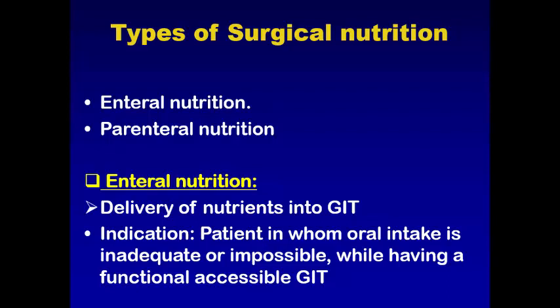Low output enterocutaneous fistula means it discharges less than 500 mL per day. When there is a fistula between the intestine and the skin and the content of the intestine leaks to the outside, we call it an enterocutaneous fistula — it may be high output or low output. In low output, some patients need enteral nutrition.